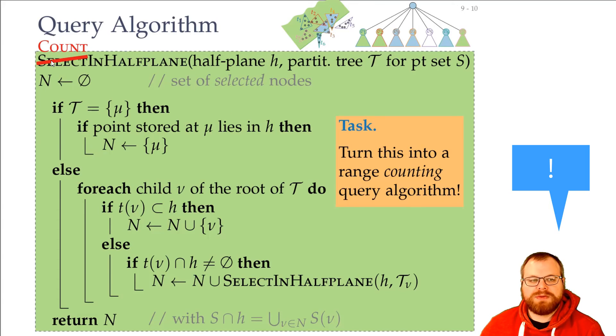So instead of select, we want to do CountInHalfPlane. And instead of having all these selected nodes, we just want to find out how many there are. So in the beginning, our N is the number of selected nodes with a zero. And in every step where we add something to this set, we just want to add the number of nodes.